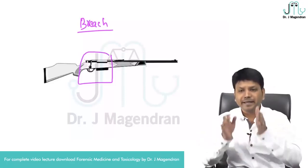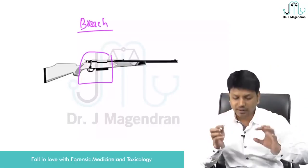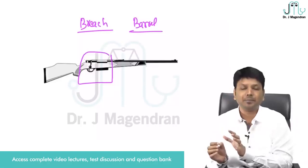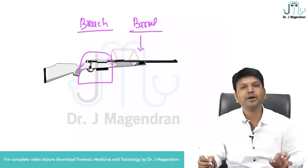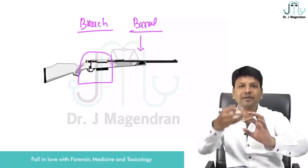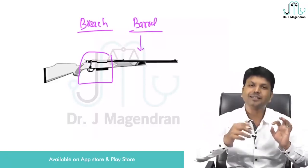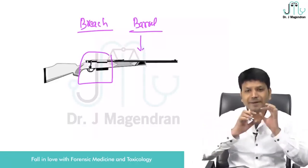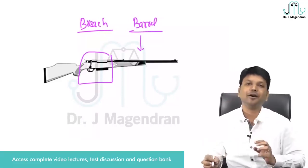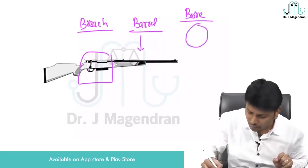The second important part: in front of the breech, you have a long metal tube. That is called the barrel. The first important part is the breech; the second important part is the barrel. It is a long metal tube placed in front of the breech, connected to the breech anteriorly. The inner diameter of the barrel is called the bore.